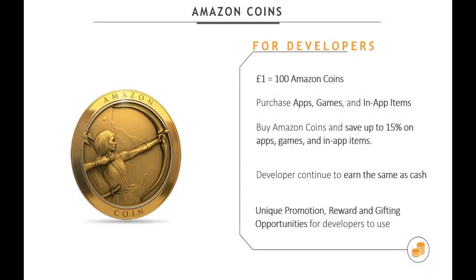One pound is worth 100 Amazon Coins. The nice thing is that if you buy a lot of them at one time, you get a bulk discount — and Amazon foots the bill for that bulk discount. Your customers can go out and spend more money on premium games or in-app purchase items. For developers, the one pound equals 100 coins works the other way around too: 100 coins still turns into one pound for you, regardless of how big a discount your customer got when they acquired the coins. You never have to worry about whether you're getting paid in cash or coins — it's all the same to you.